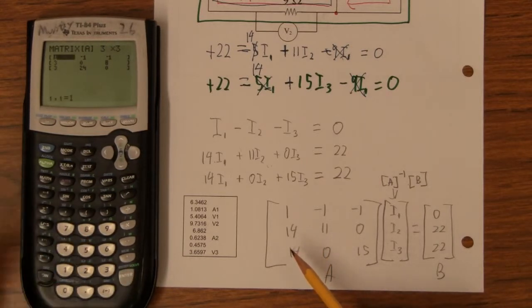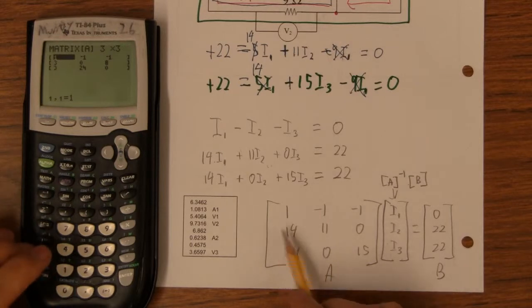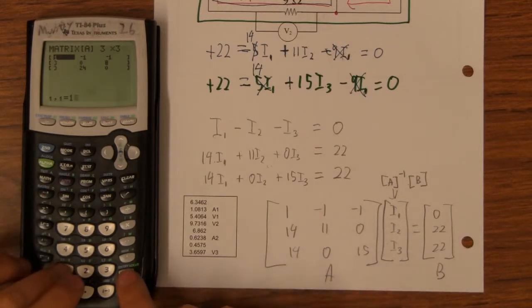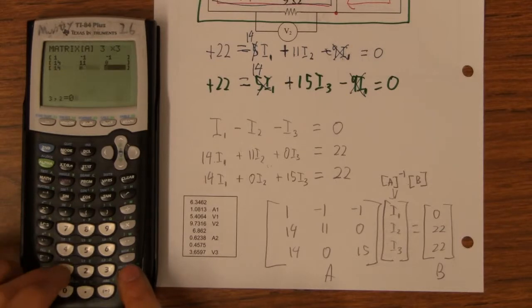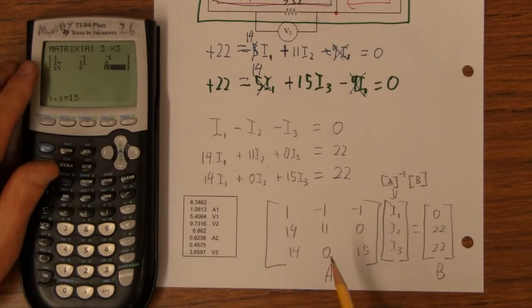If it's not a 3 by 3 matrix, make it 3 by 3. Now we're going to type these in and it goes left to right: 1, -1, -1; 14, 11, 0; 14, 0, 15.